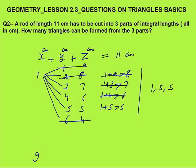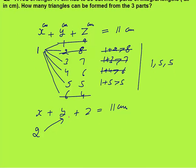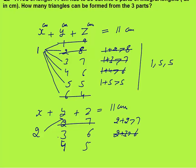Now taking x equals 2: y and z combinations are 2 and 7, 3 and 6, 4 and 5. Checking (2, 2, 7): 2 plus 2 is not greater than 7 — not a triangle. (2, 3, 6): 2 plus 3 = 5, not greater than 6 — no. (2, 4, 5): 2 plus 3 is greater than 5 — yes, this makes a triangle. So one more triangle found: (2, 4, 5).